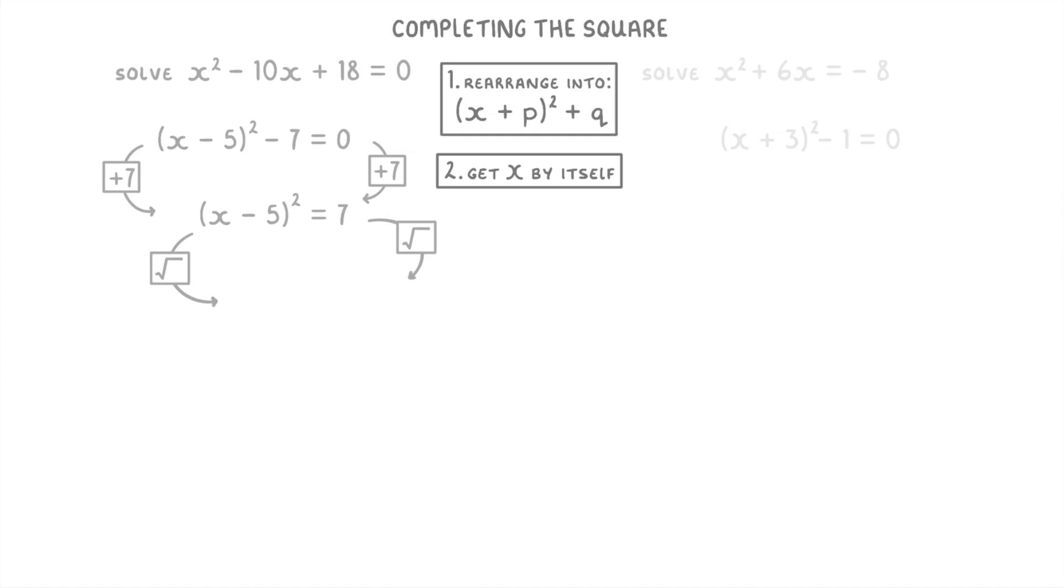Then we can square root both sides to get x minus 5 equals plus or minus root 7. Because remember, whenever we square root a number, there are two possible solutions, a positive one and a negative one.